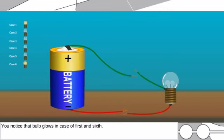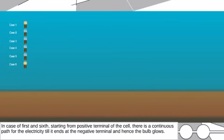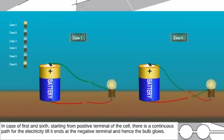You notice that bulb glows in case of first and sixth. Starting from positive terminal of the cell, there is a continuous path for the electricity till it ends at the negative terminal and hence the bulb glows.